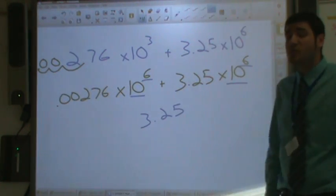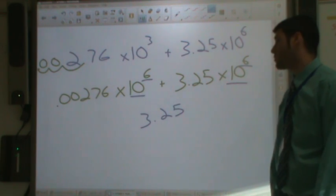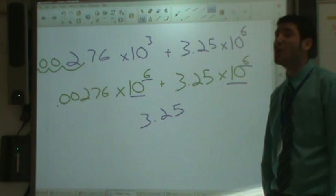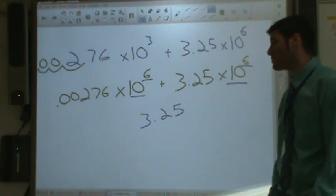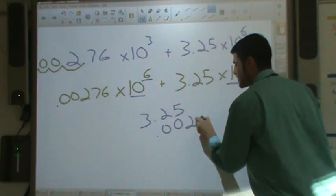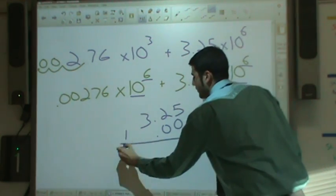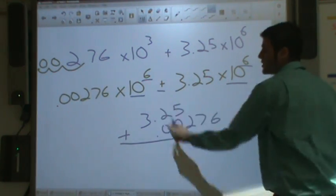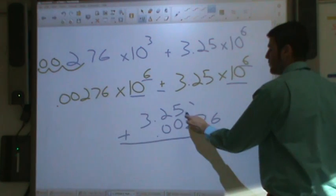Now the only key thing that I can say here is make sure that you line up your decimal points. If you don't line up your decimal points, you're probably going to get the wrong answer. So let's go ahead and do that. We line up our decimal points, 0.00276. And again, we're adding because of the addition sign right there.